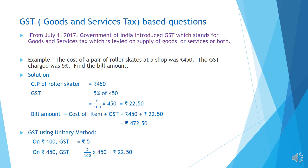Let us understand GST by one example. The cost of a pair of roller skates at a shop was Rs. 450. The GST charge was 5%. Find the bill amount.